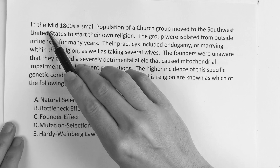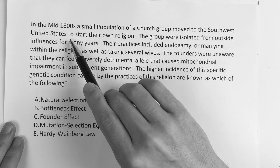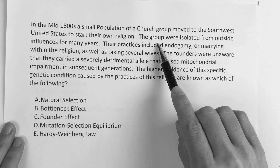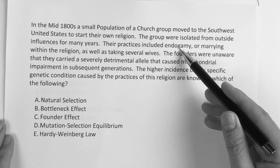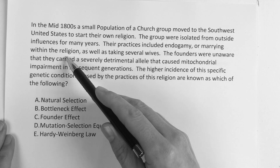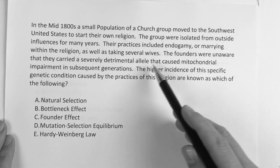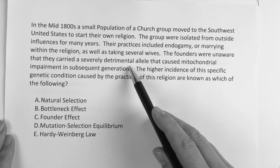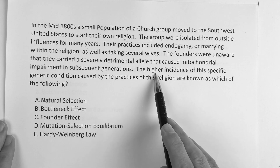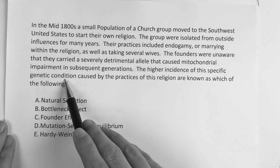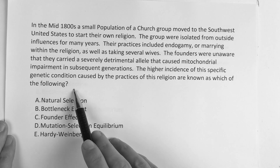The question says: in the mid-1800s, a small population of a church group moved to the southwest United States to start their own religion. The group were isolated from outside influences for many years. Their practices included endogamy — marrying within the religion — as well as taking several wives. The founders were unaware that they carried a severely detrimental allele that caused mitochondrial impairment in subsequent generations. The higher incidence of this specific genetic condition caused by the practices of this religion is known as which of the following?